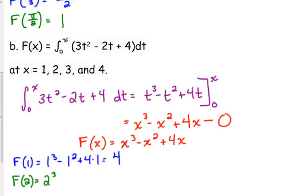F of two is two cubed minus two squared plus four times two. F of two, so eight minus four is four plus eight is 12. F of three, three cubed minus three squared plus four times three. Three cubed is 27 minus three squared is 27 minus nine is 18 plus 12. So, that's 30.